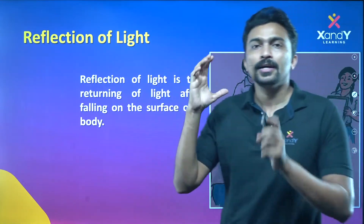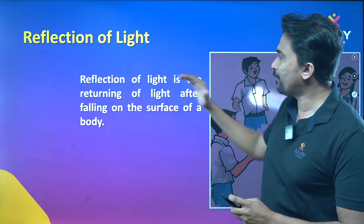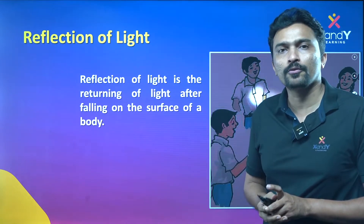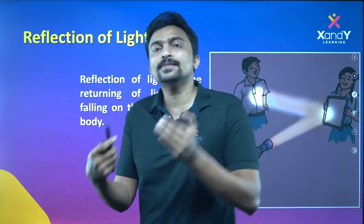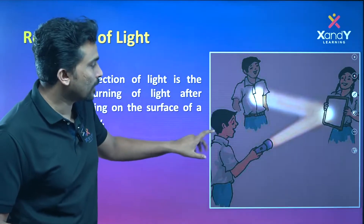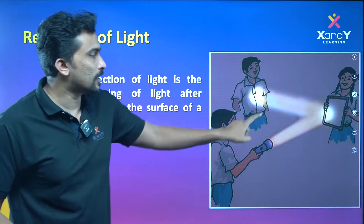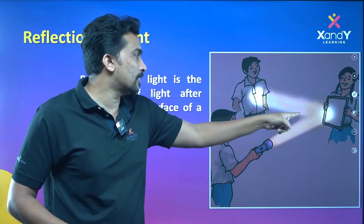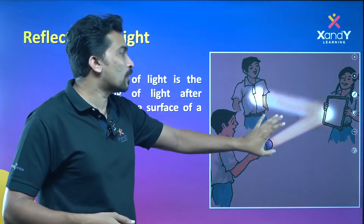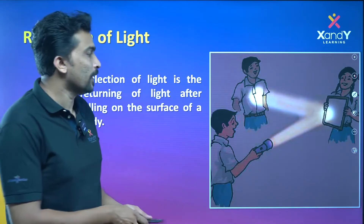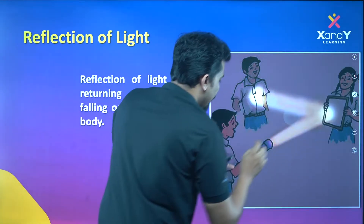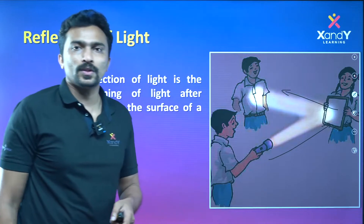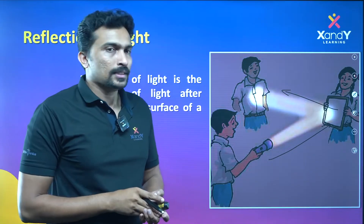The first important property is reflection of light. Reflection of light is the returning of light after falling on the surface of an object. If you shine a torch on a mirror, the light will be placed — it starts from the torch, hits the mirror, and reflects. We will see the light reflected in the mirror. This is reflection of light.